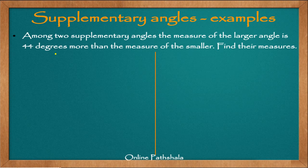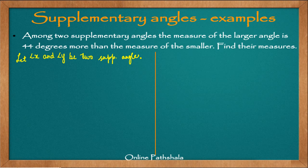Let us first assume what the two angles are. We don't know the angles, and as we have done in this chapter, we have been using two angles — angle X and angle Y. So I am still following that convention: let angle X and angle Y be two supplementary angles. What we want to do is find out their measures. We are given that the measure of the larger angle is 44 degrees more than the measure of the smaller.